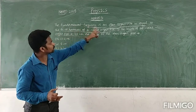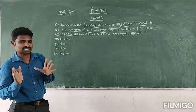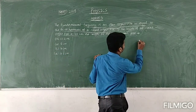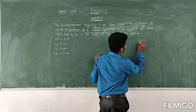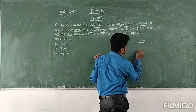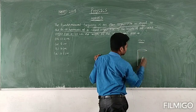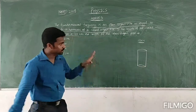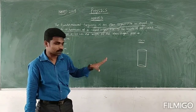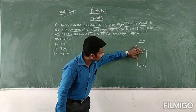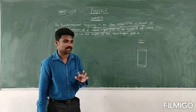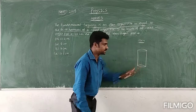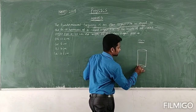The fundamental frequency of an open organ pipe — let's take an open organ pipe. In an open organ pipe, both sides will be open. At the open end, an antinode will be formed. So both ends will be antinodes, meaning in the middle, a node will be formed. This is like a wave.